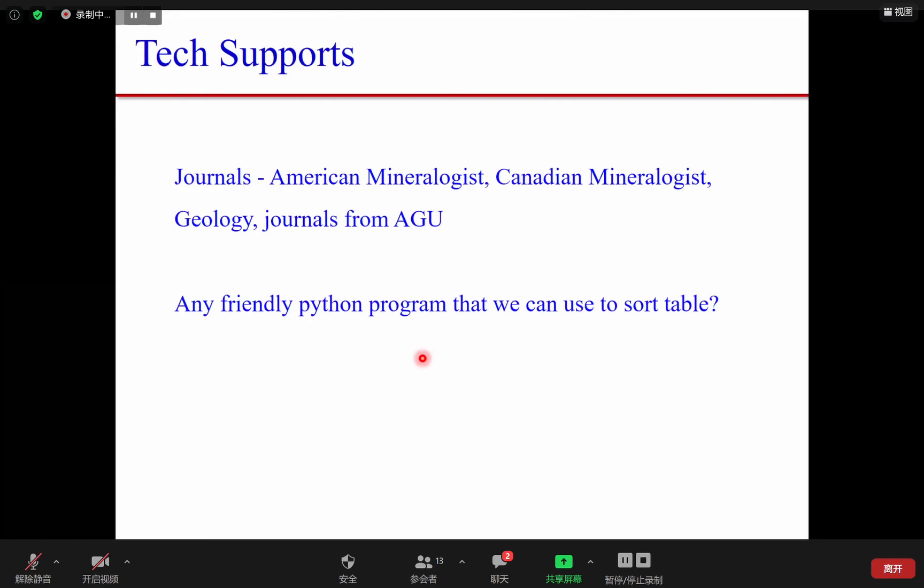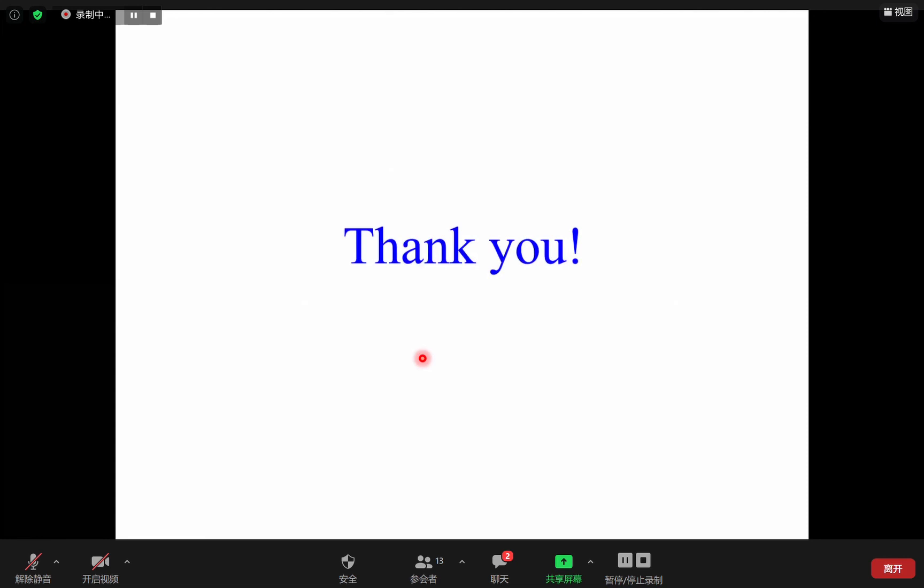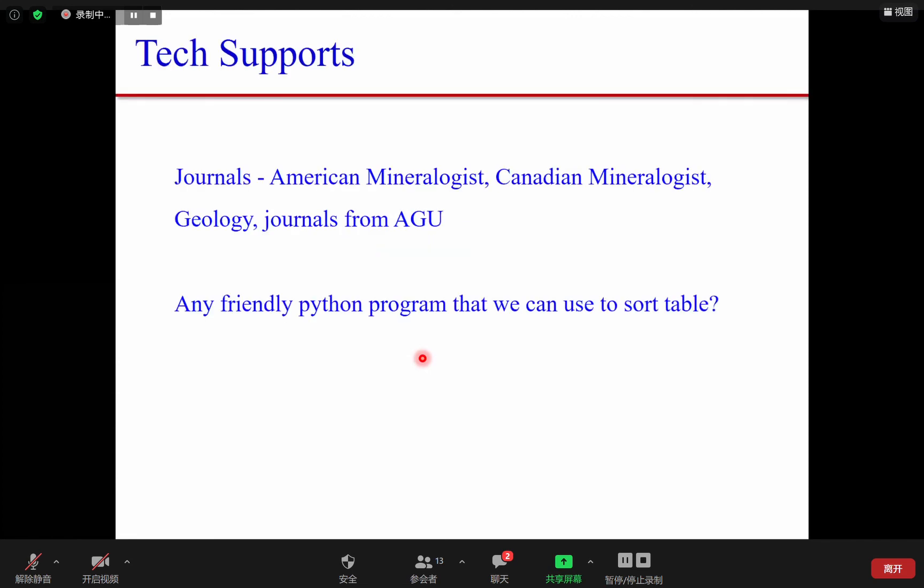Right now, our group has two questions: if the journal group has the data of these publications, and also any updates for the Python programs that we can use efficiently to sort tables. I think you could chat more with other group leaders.